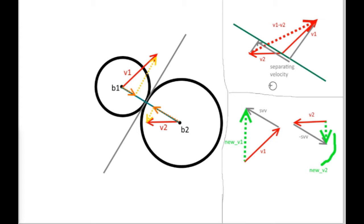The separating velocity is a scalar, not a vector. I can make a vector out of it by multiplying the unit vector along the normal by the value of the separating velocity. That separating velocity vector is the one that needs to be multiplied by minus one for an elastic collision. I then add it to the first ball's original velocity vector to get its new velocity, and add the separating velocity vector multiplied by minus one to the second ball's original velocity. So the first ball will move upwards after the collision and the second ball will move downwards.